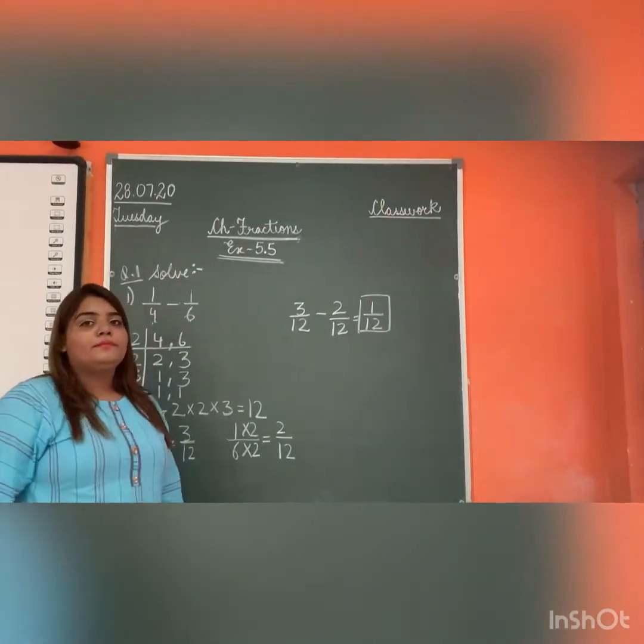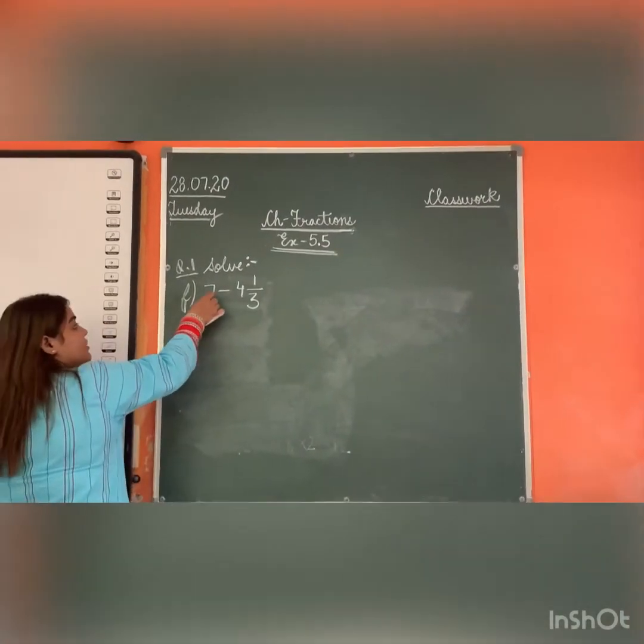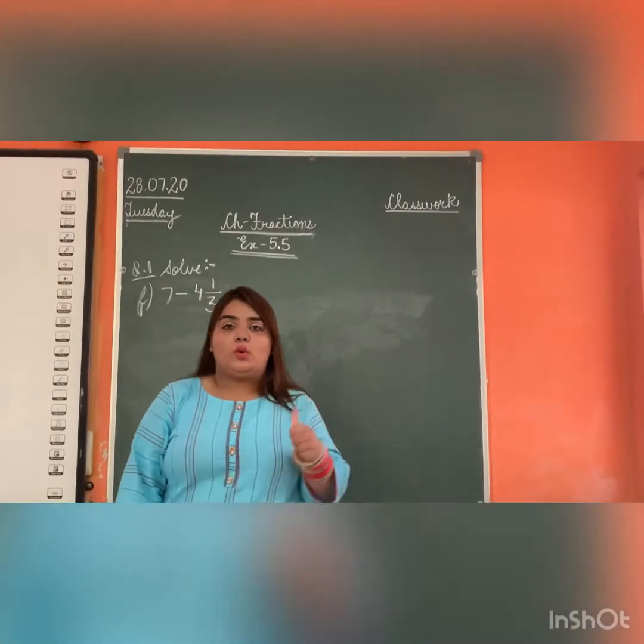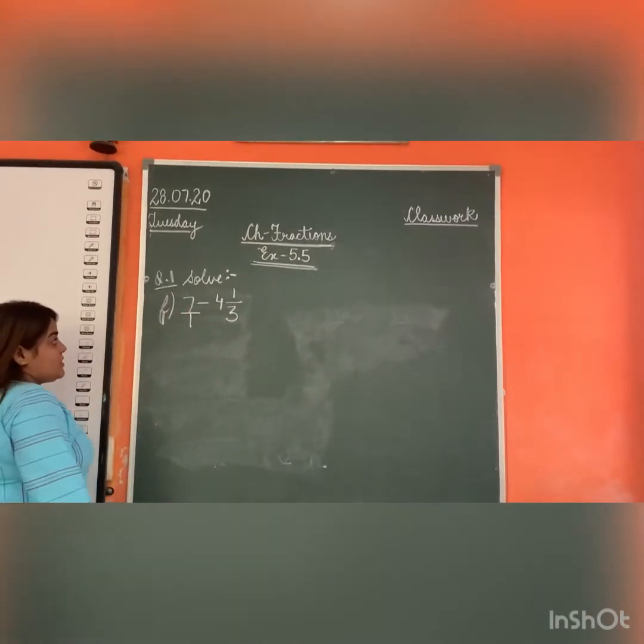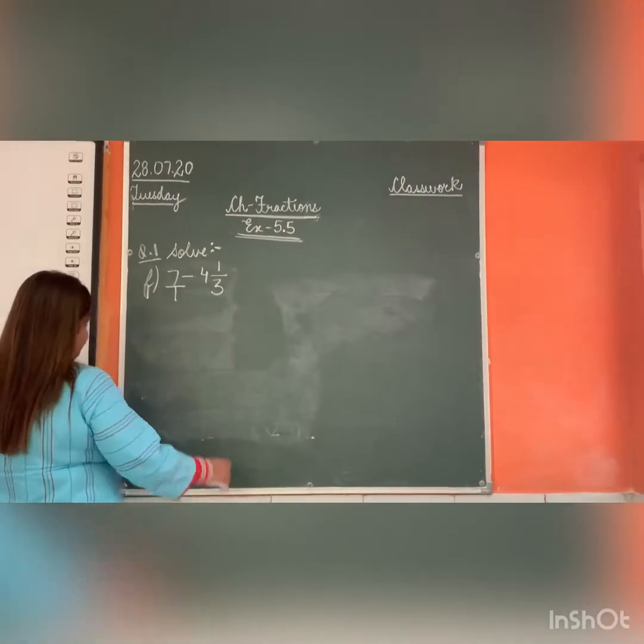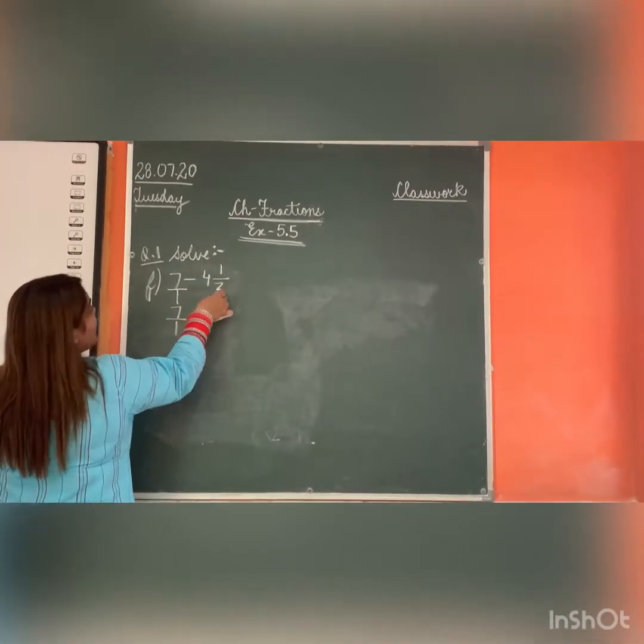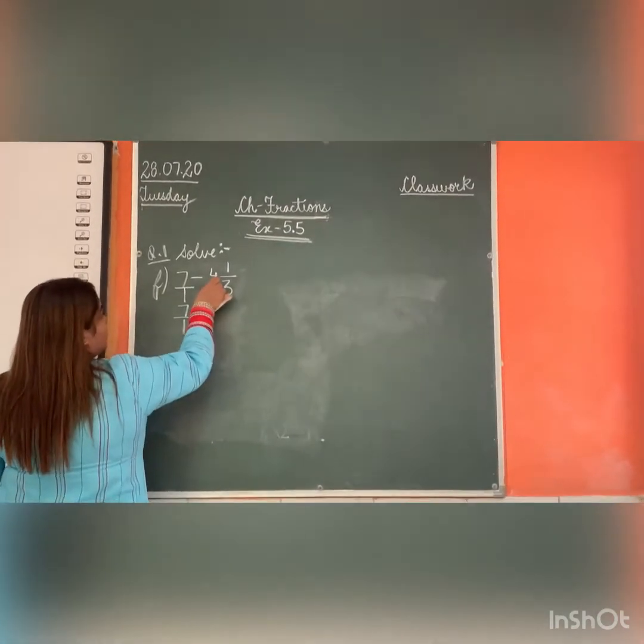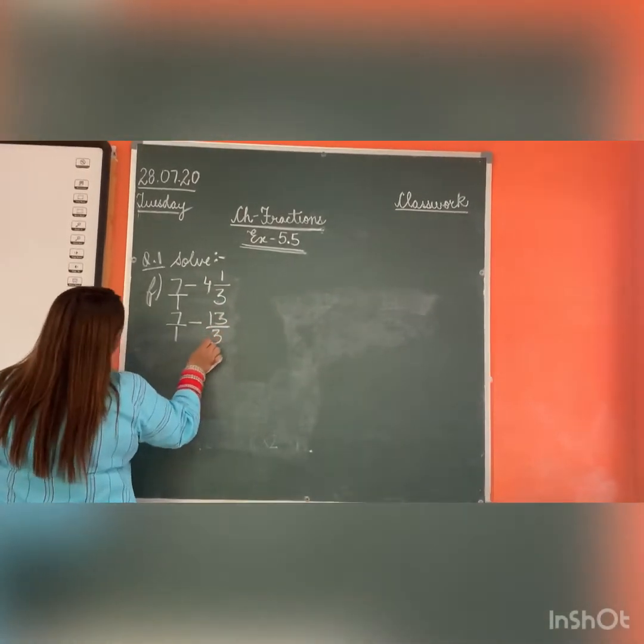Chak khahi numerator ho ba aur denominator kya niche kuch bhi nahi ho ga? So we use 1. What do we use as denominator? 1. Now we have 7 by 1 minus, we will convert this into improper fraction. 4 by 1 and 1, 13 upon 3.